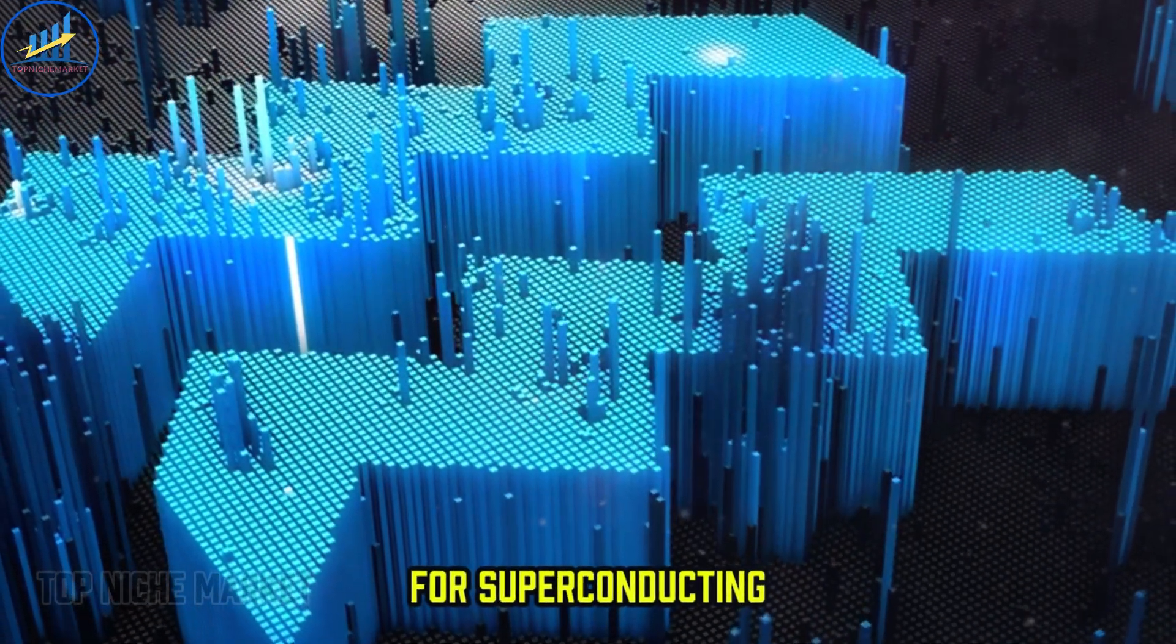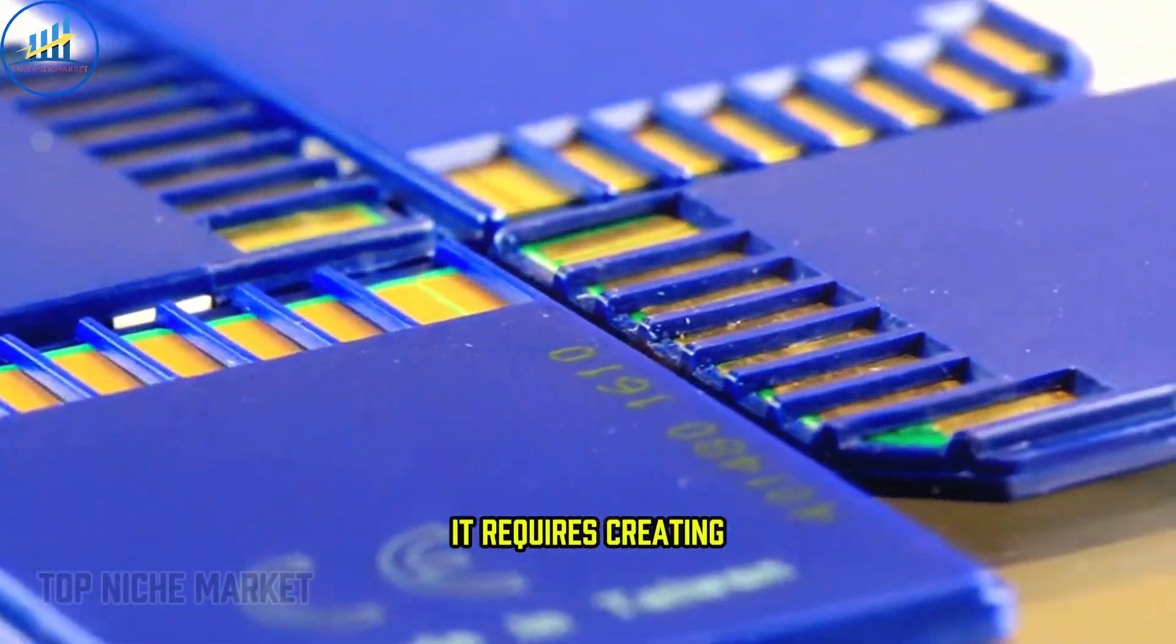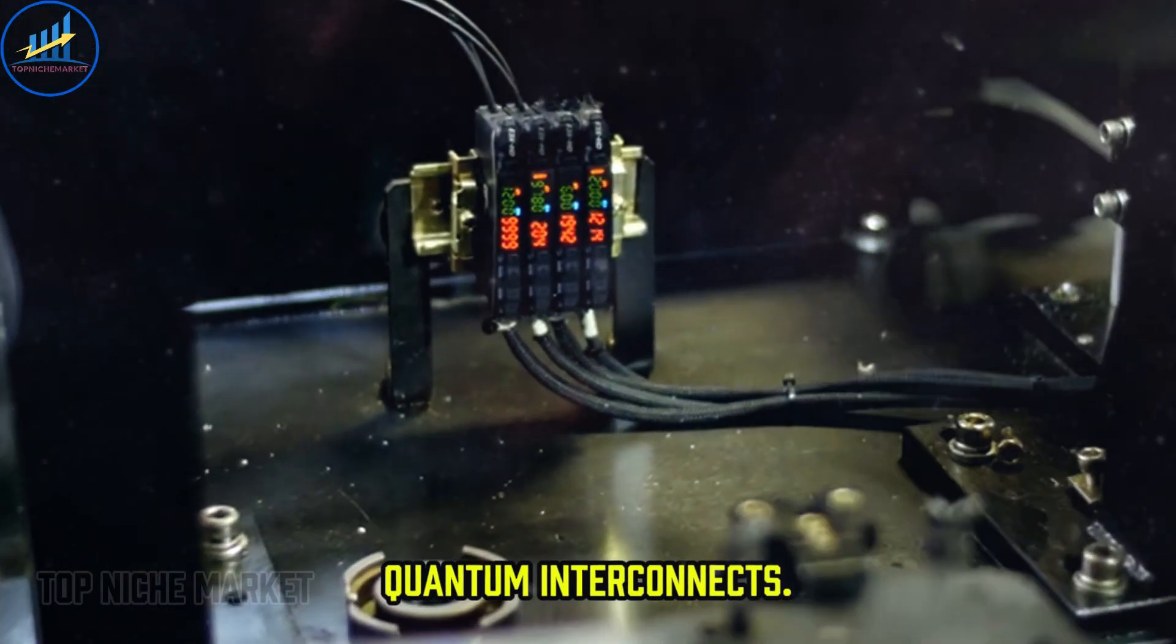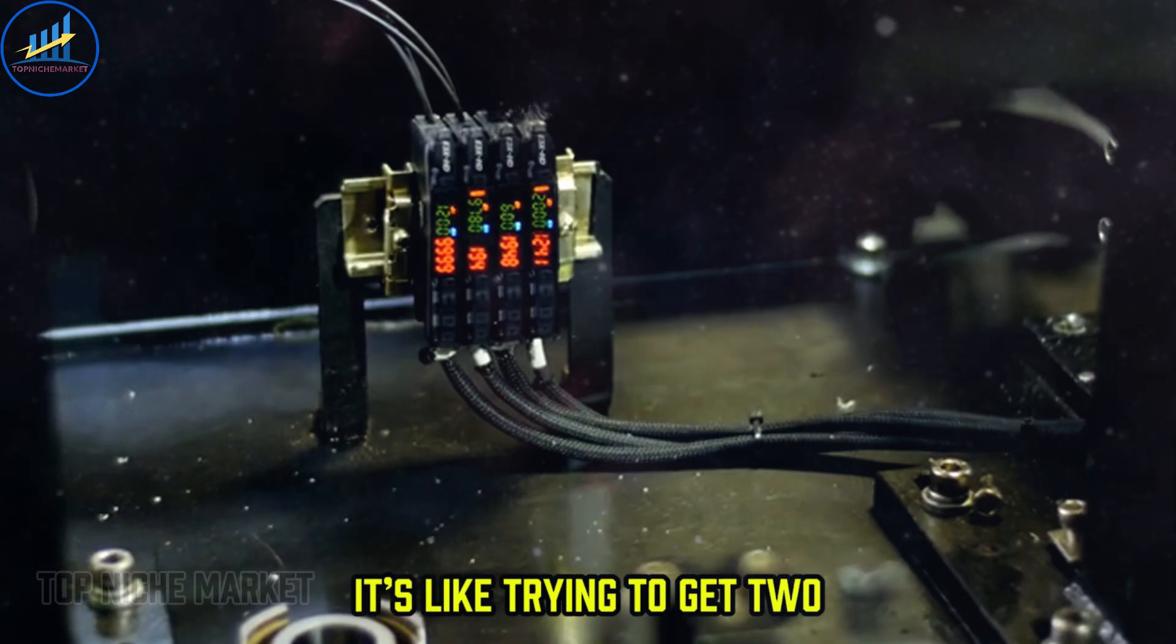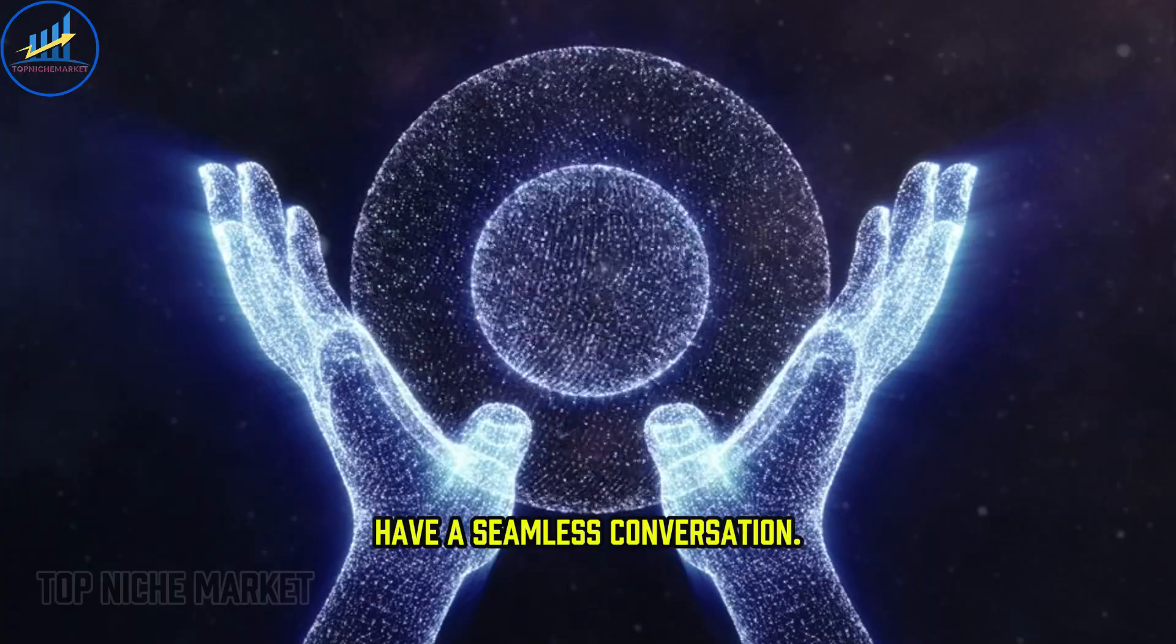For superconducting systems, linking two quantum chips is a monumental task. It requires creating complex, fragile, and often custom-built quantum interconnects. It's like trying to get two people who speak completely different, dead languages to have a seamless conversation.